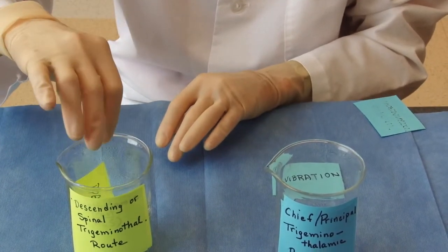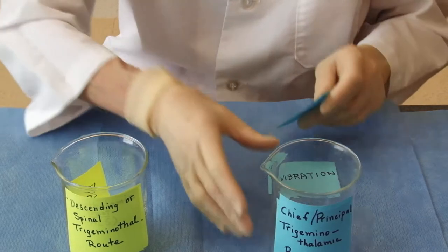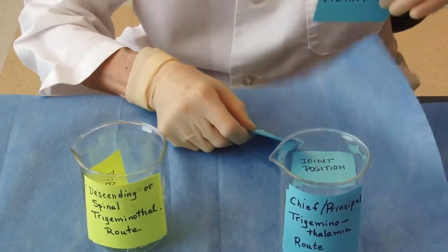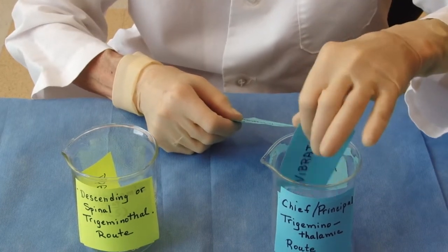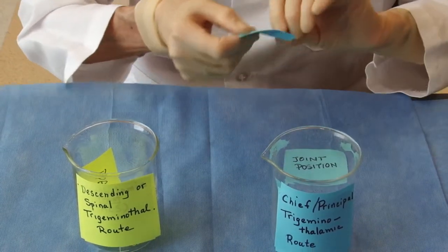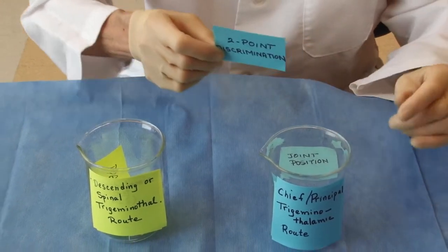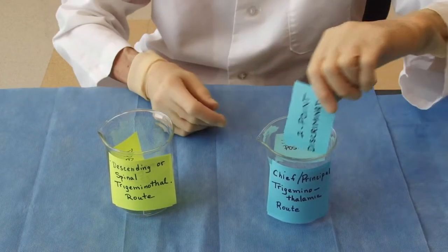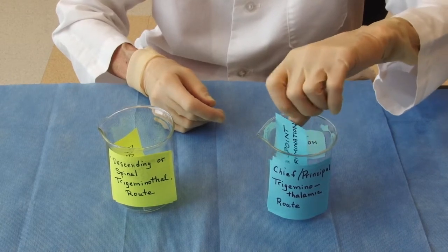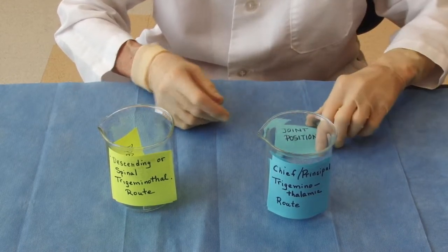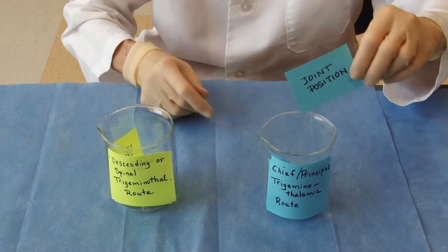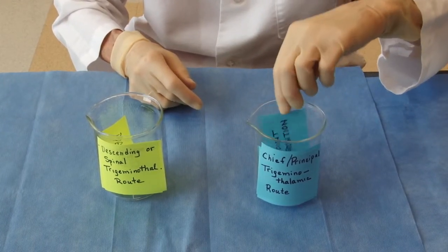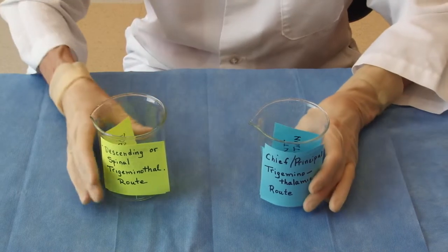And the other one carries vibration, two-point discrimination, like knowing if my face is being touched in two places or one when two points are placed on my skin, and also joint position. This must be jaw, that's about the only joint we have from the face.